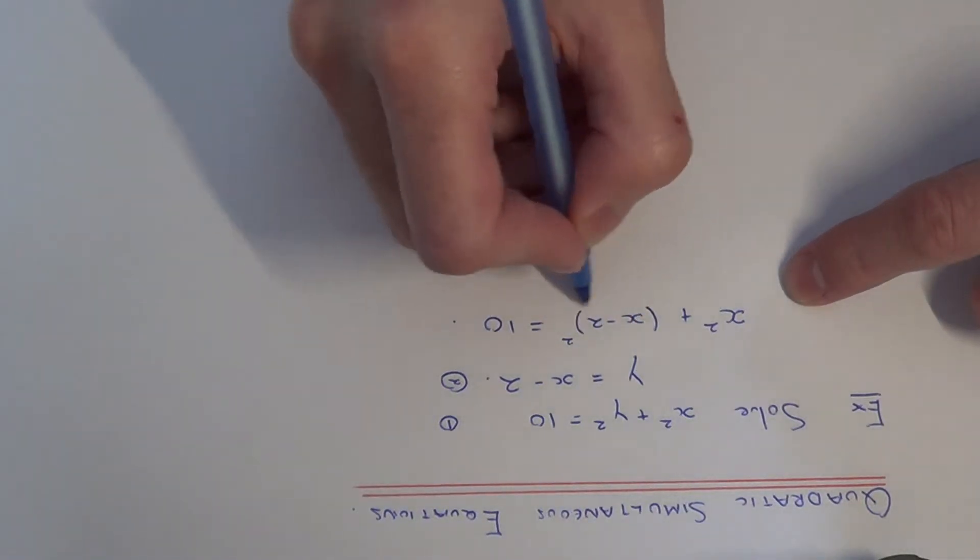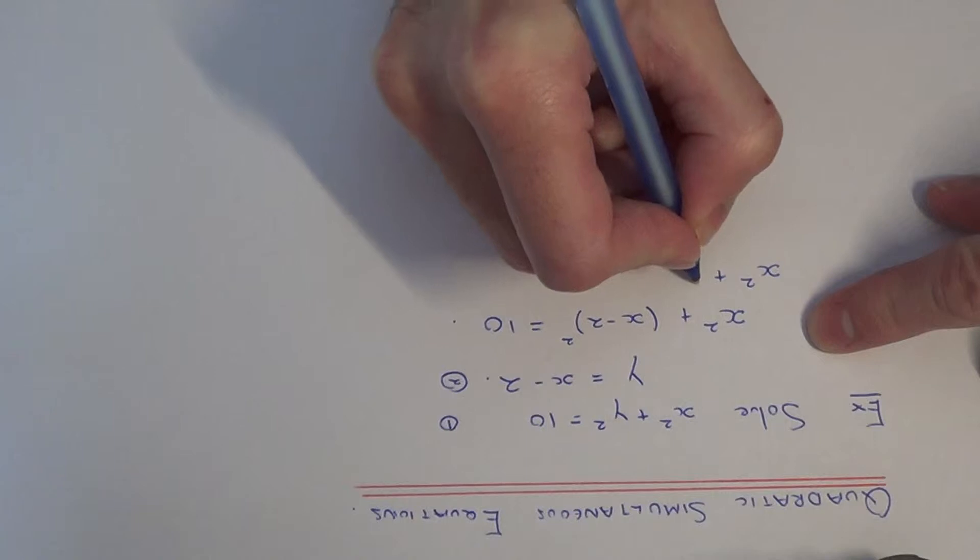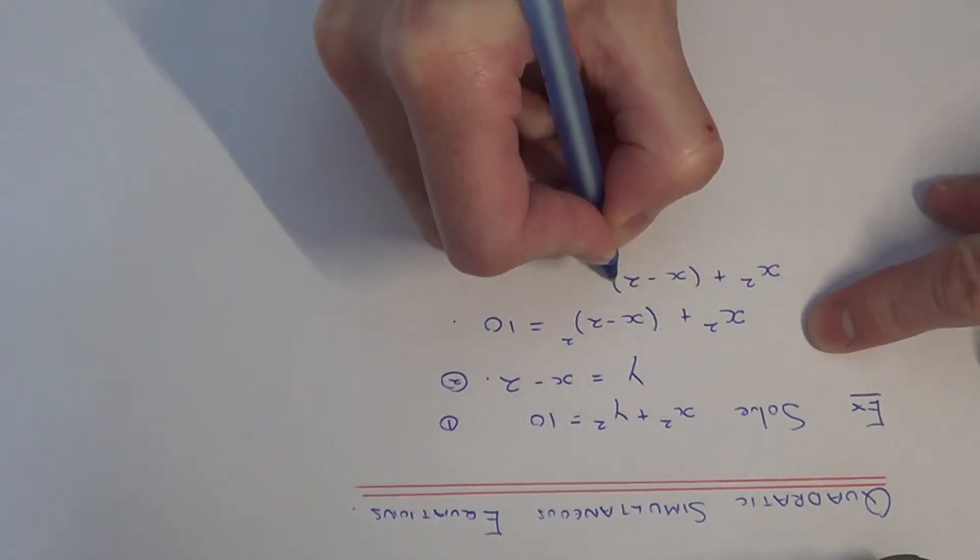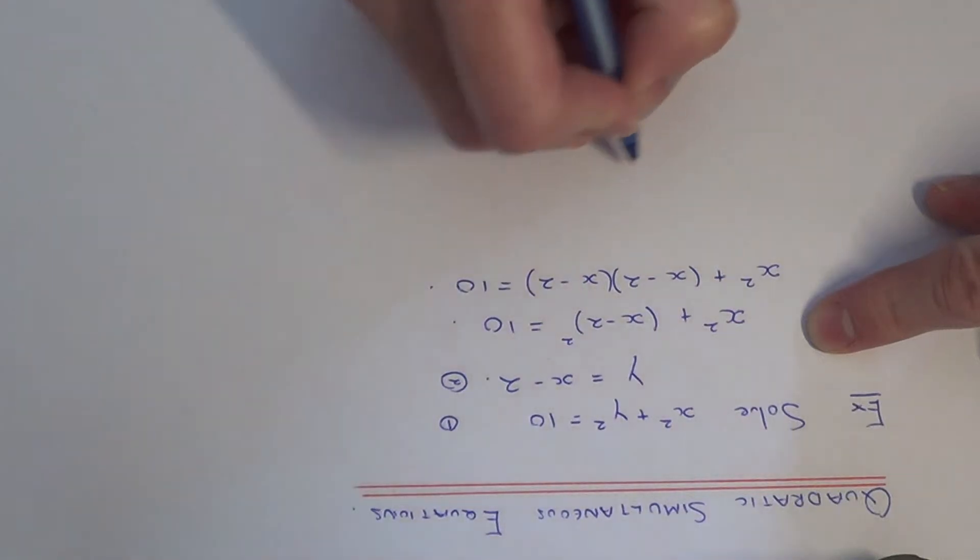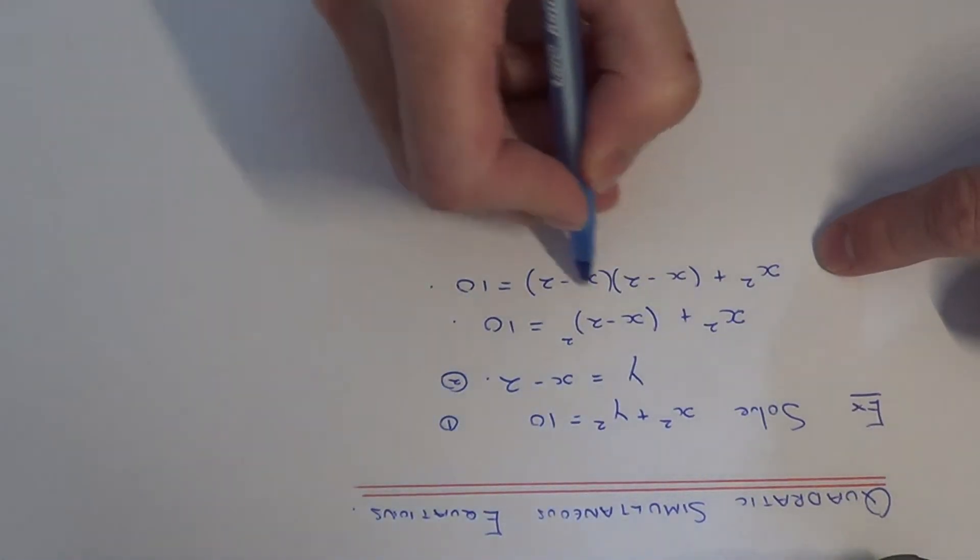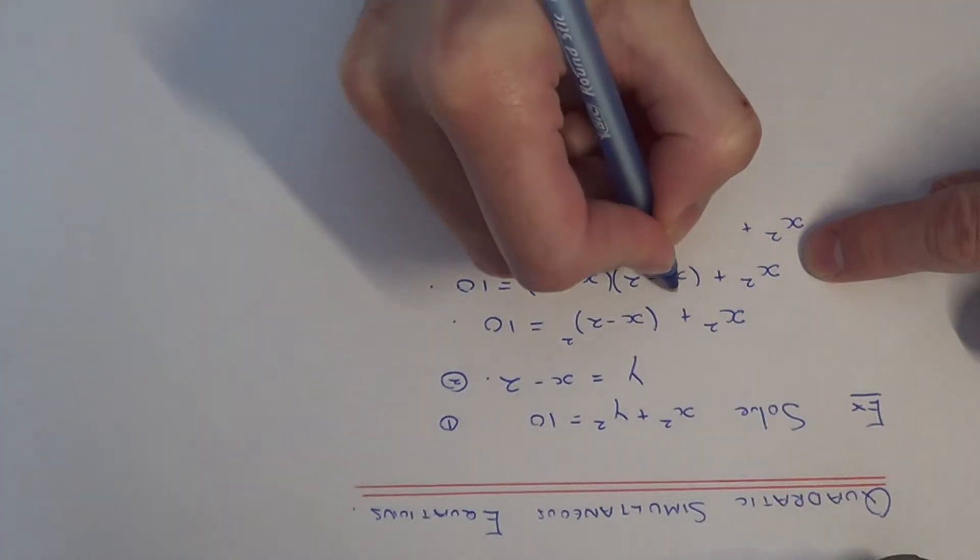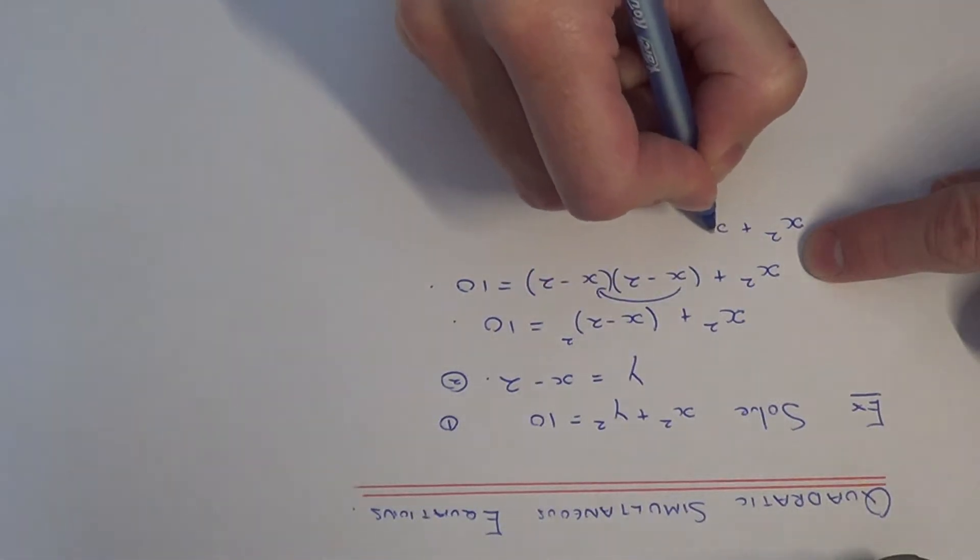So this is a double bracket here because it's being squared. So if we just expand this double bracket out here, x times x is x squared,